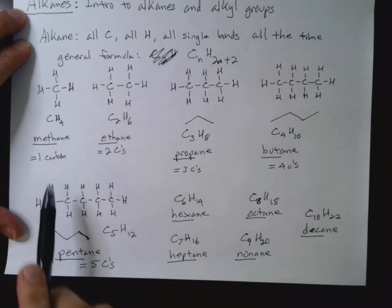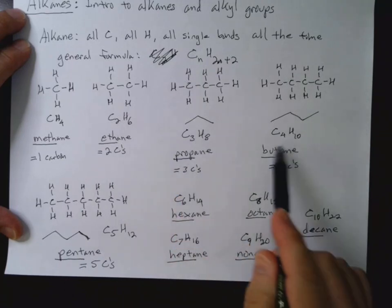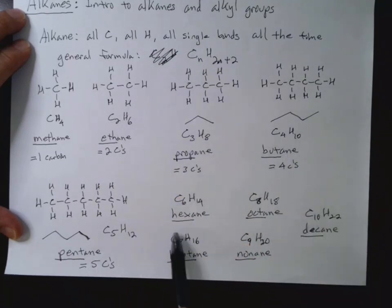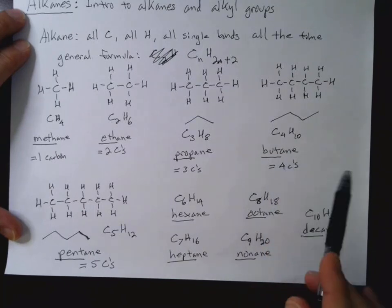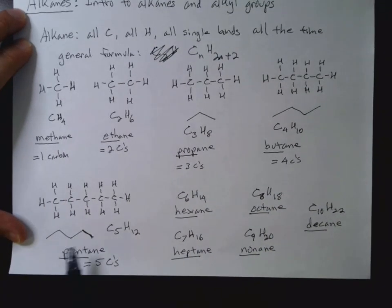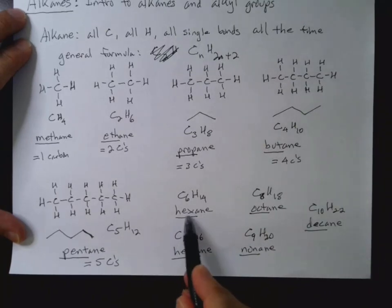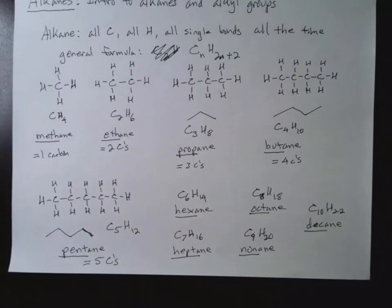So it's helpful to know these prefixes. You definitely need to know meth is one, eth is two, prop is three, but is four, pent is five, hex is six, hept is seven, oct is eight, etc. So the first four are maybe not something you're used to, but then once you get to five, six, seven, eight, nine, 10, these should be familiar from the typical Greek prefixes that you might have seen in other nomenclature. Like SF6 is sulfur hexafluoride, so hex for six. So hexane has six carbons.